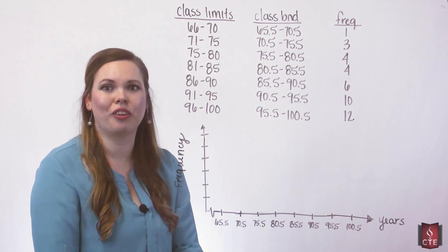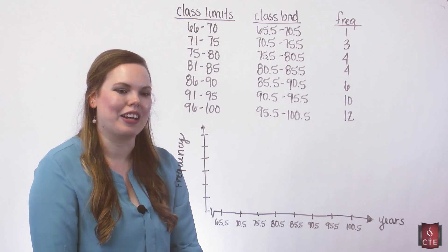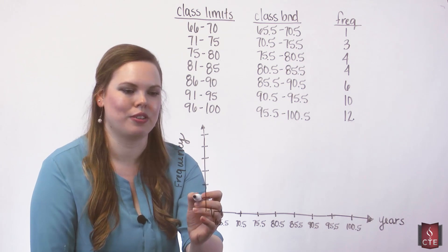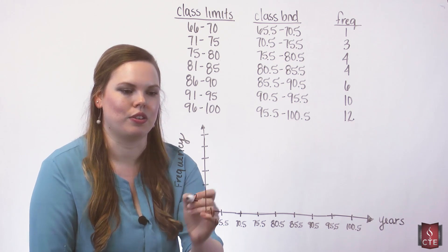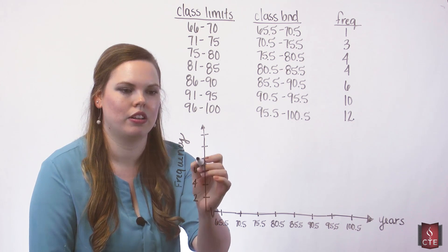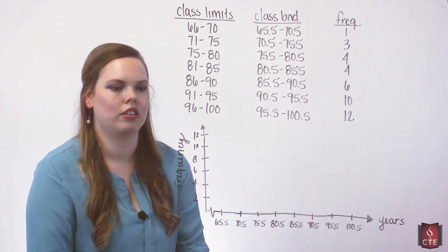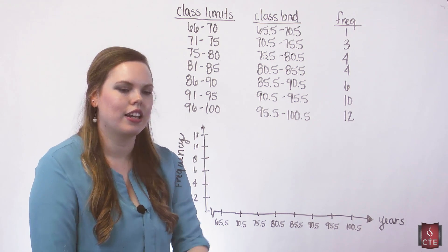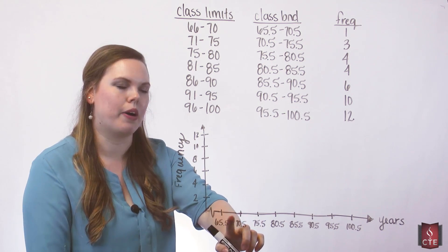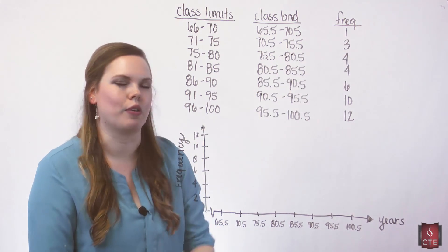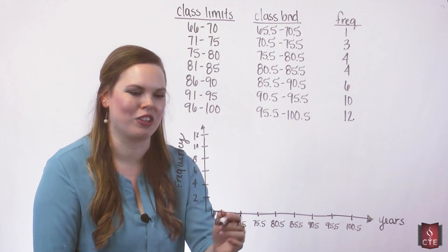So we're just going to construct a vertical bar graph at this point. I'm counting by twos right here, so I'll label this as two. I'll go ahead and label them all. So my first bar is going to have a height of one, since that's the frequency of my first class.